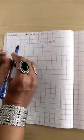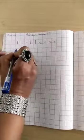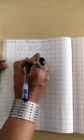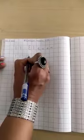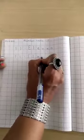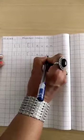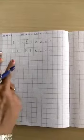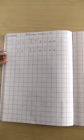You will write here, leave one line and you will write here, E, L, E, V, E, N, 11. So in this way, you will finish this line. Thank you.